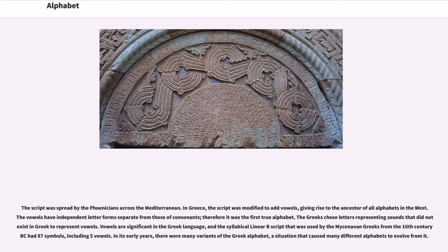The script was spread by the Phoenicians across the Mediterranean. In Greece, the script was modified to add vowels, giving rise to the ancestor of all alphabets in the West. The vowels have independent letter forms separate from those of consonants; therefore it was the first true alphabet. The Greeks chose letters representing sounds that did not exist in Greek to represent vowels. Vowels are significant in the Greek language, and the syllabic Linear B script used by the Mycenaean Greeks from the 16th century BC had 87 symbols, including five vowels.